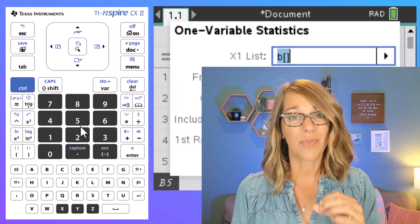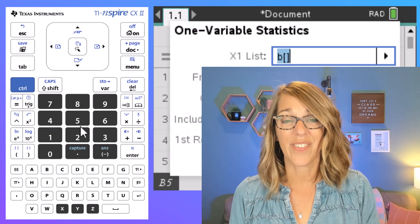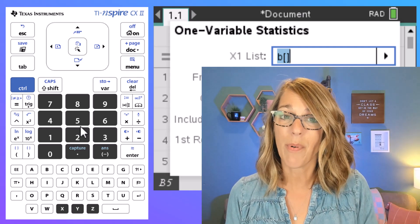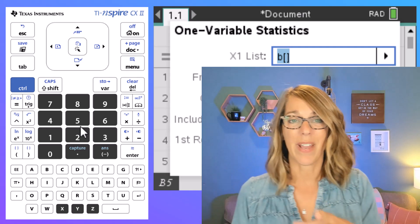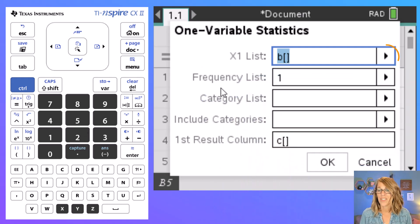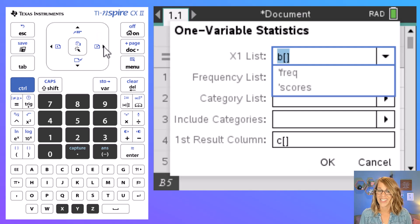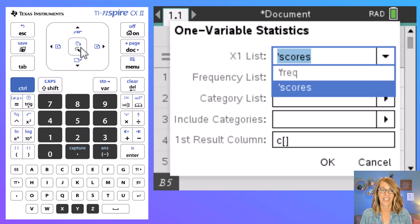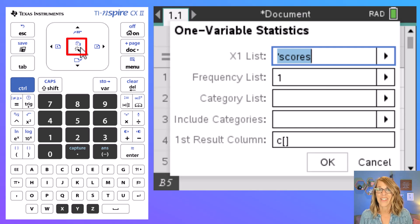Next it wants that x1 list which is really my data list and those data values in this case my midpoints live in my scores column. Notice there's a right arrow here. I'm going to click the right arrow on my touchpad twice and that gives me my two column headings. I want for my x or my data list I want scores so arrowing down to that and then you can click the center button of your touchpad.